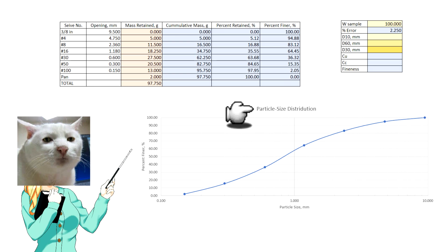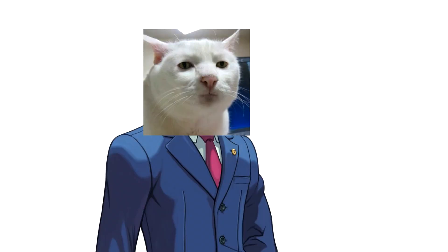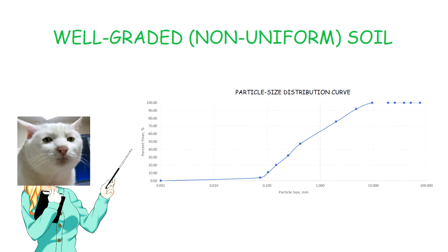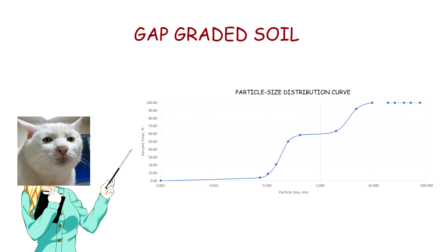Draw the grain size distribution curve by plotting the data on a semi-logarithmic graph with grain size as abscissa on a logarithmic scale and percent finer as ordinate on an arithmetic scale. Using the grain size distribution curve, you can classify the sample according to the shape of the curve. It is well-graded or non-uniform if it is a smooth curve covering a wide range of sizes. It is poorly graded or uniform if it has a straight, nearly vertical portion indicating a deficiency of a certain size in that region. It is gap-graded if the curve shows two or more well-graded portions.